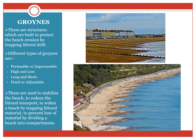Groins. As you can see in these figures, these are structures which are built to protect the beach from erosion by trapping littoral drift. There are four major types of groins: permeable, impermeable, high and low, long and short, and fixed or adjustable. The groins are used to stabilize the beach, to reduce the littoral transport, to widen a beach by trapping littoral material, and to prevent the loss of material by dividing a beach into compartments. These are the different compartments a beach is divided into by the usage of groins.